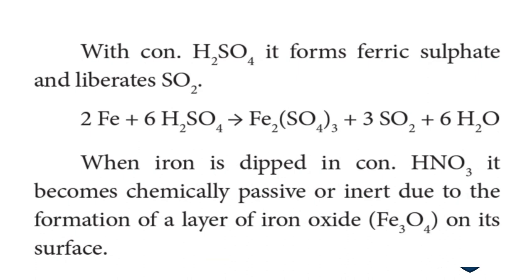With concentrated sulphuric acid, iron forms ferric sulphate Fe₂(SO₄)₃ and liberates sulphur dioxide SO₂ gas and water. When iron is dipped in concentrated nitric acid, it becomes chemically passive or inert due to the formation of a layer of iron oxide Fe₃O₄ on its surface.